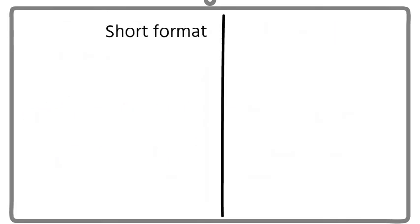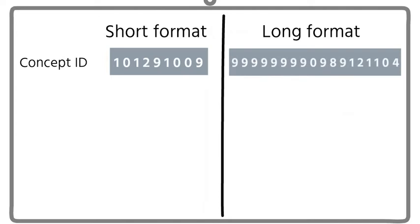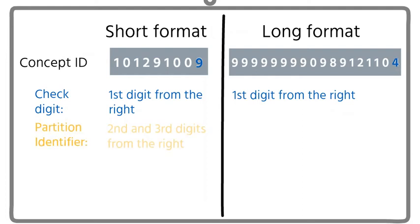Let's take a look at the difference in the format between the long and the short IDs. The check digit in both instances is the first digit from the right. The partition identifier in both instances is the second and third digits from the right.